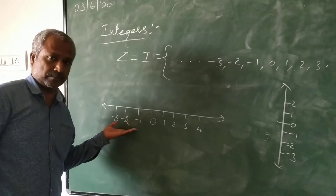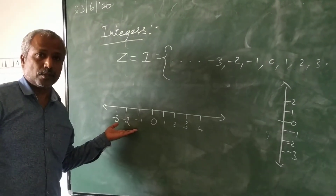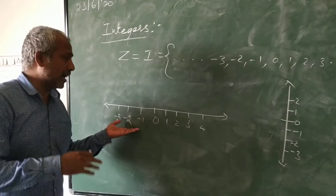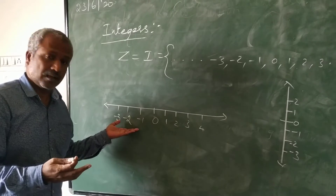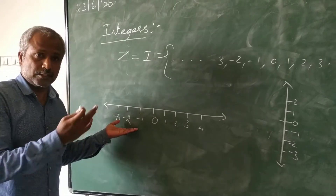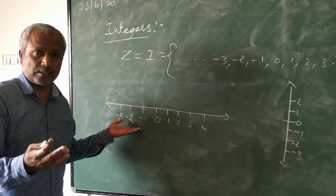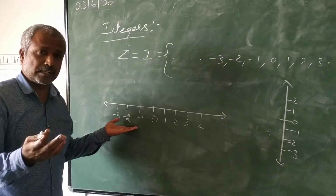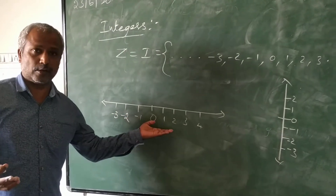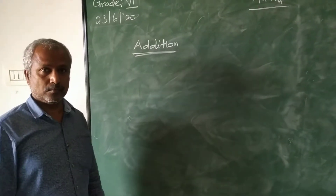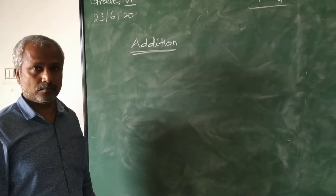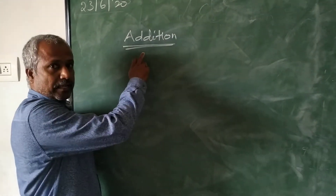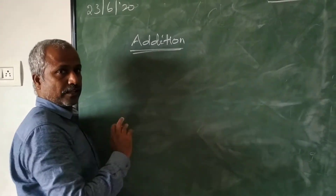This is called as the horizontal number line. So next we will look at how to add integers and how to subtract integers, both mathematically and using the number line. Now, we will look at the addition of integers.